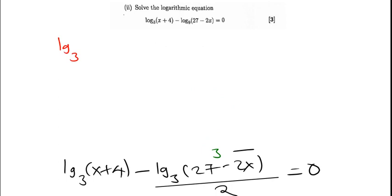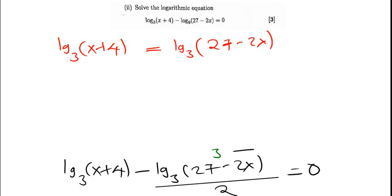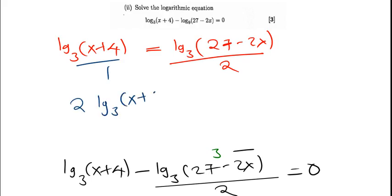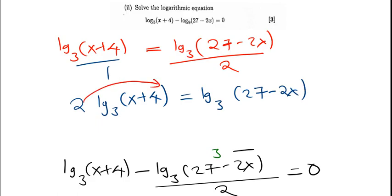We have log base three of (x plus four). We move the other term to the other side so it becomes positive: log base three of (27 minus 2x), all divided by two. If we cross-multiply, we get two times log base three of (x plus four) equals log base three of (27 minus 2x). Now just like before, that two can become the power of (x plus four).